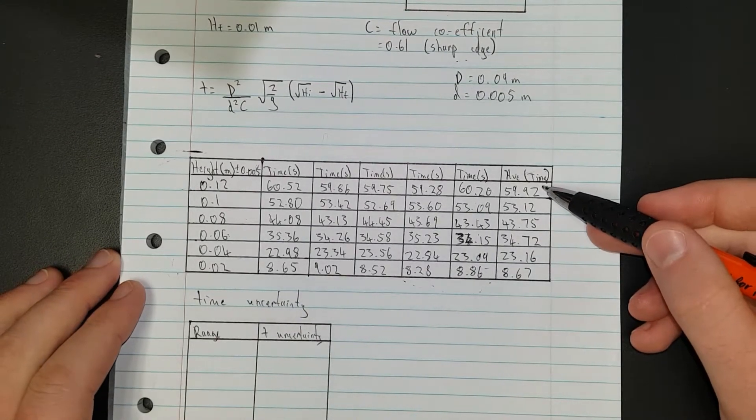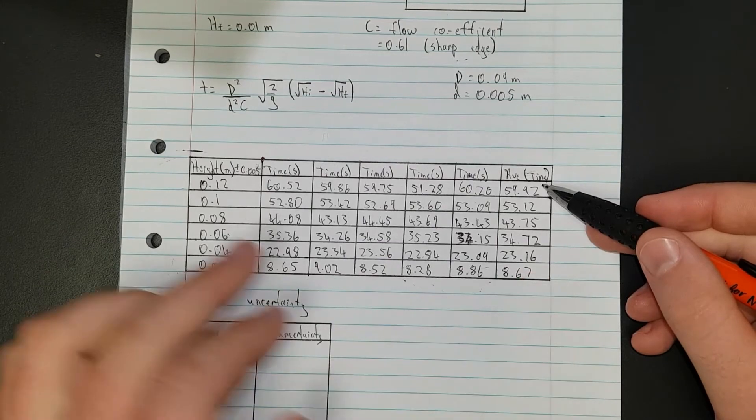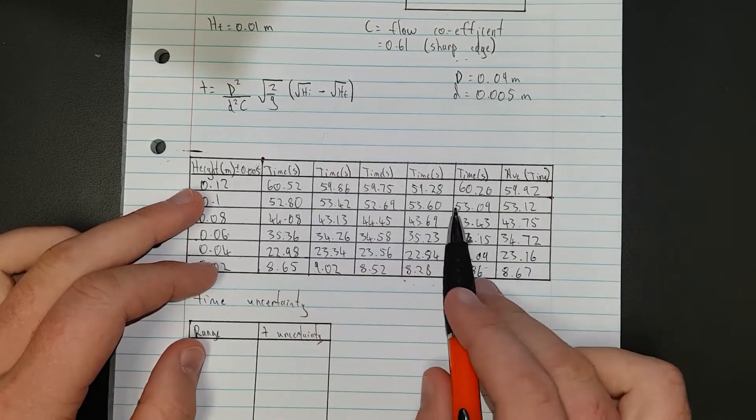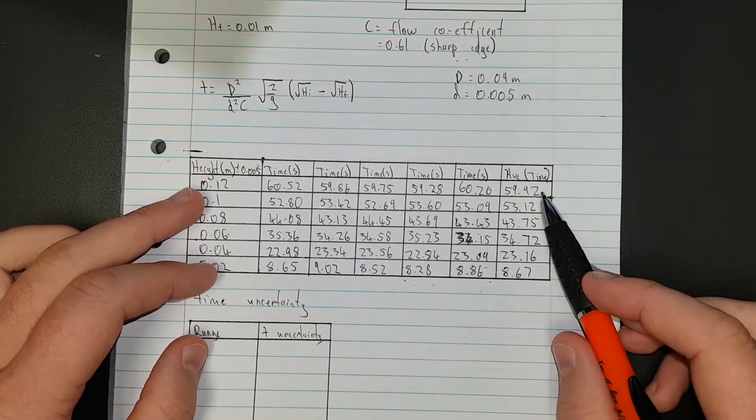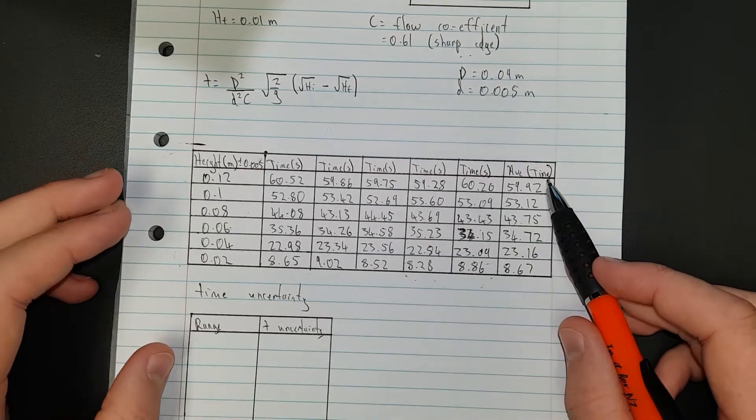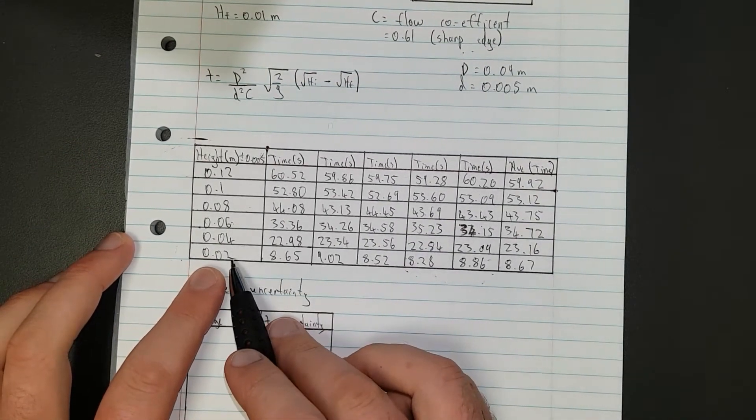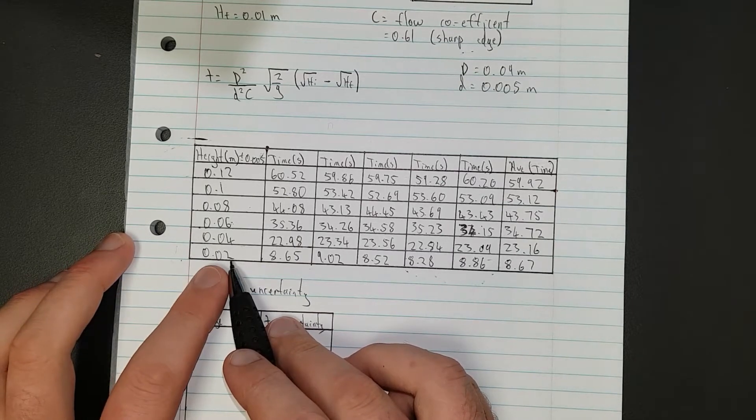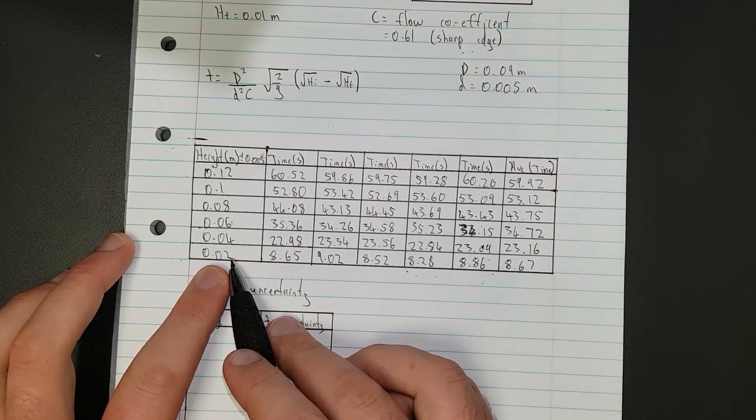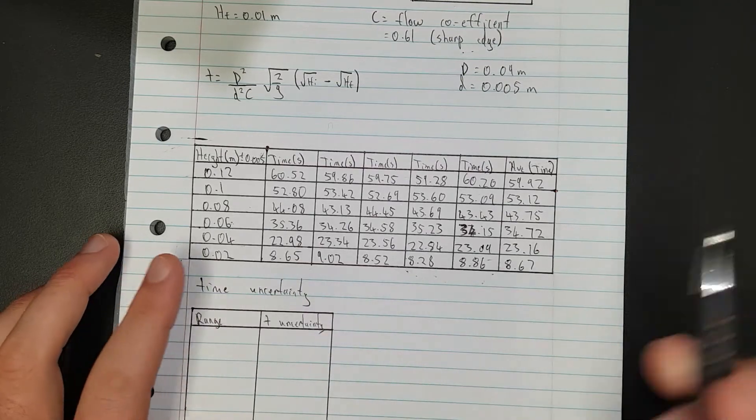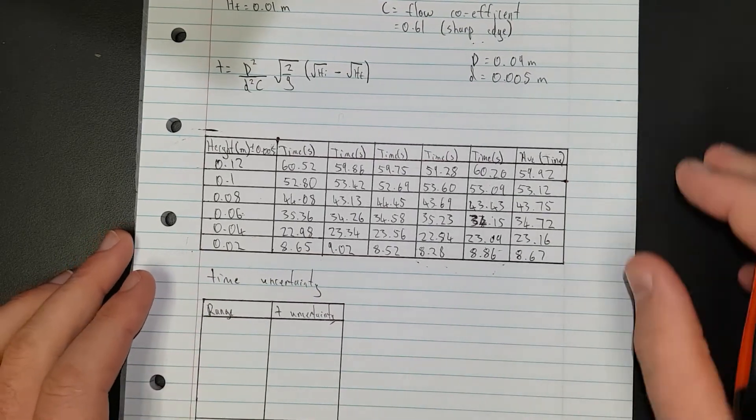I've got my average time for each different height. I took five trials to be as accurate as possible and I stopped at 0.02 meters (two centimeters) because below that I was having trouble. I'll talk about that in my discussion - it's a good discussion point to have.